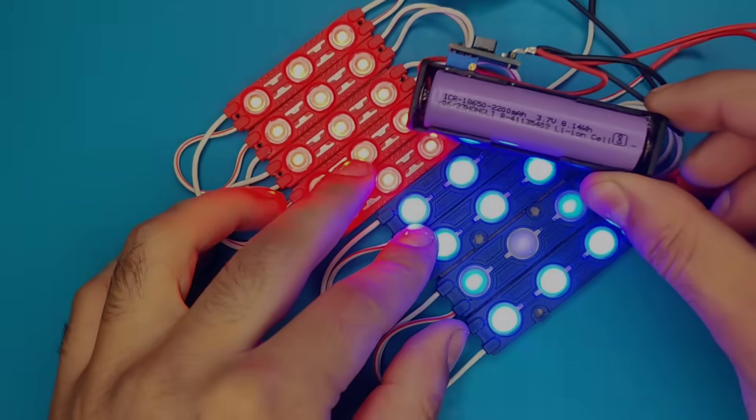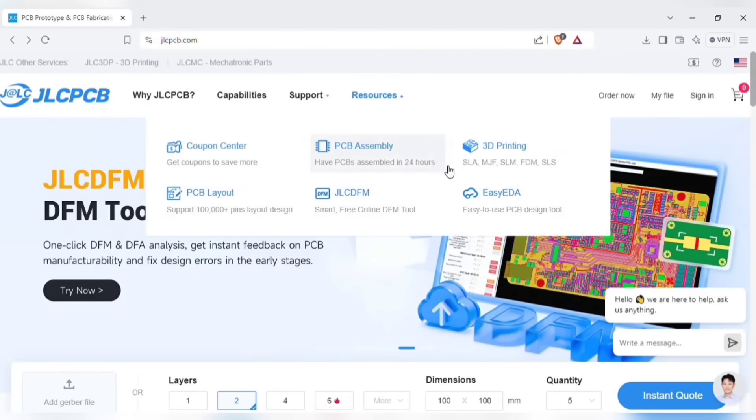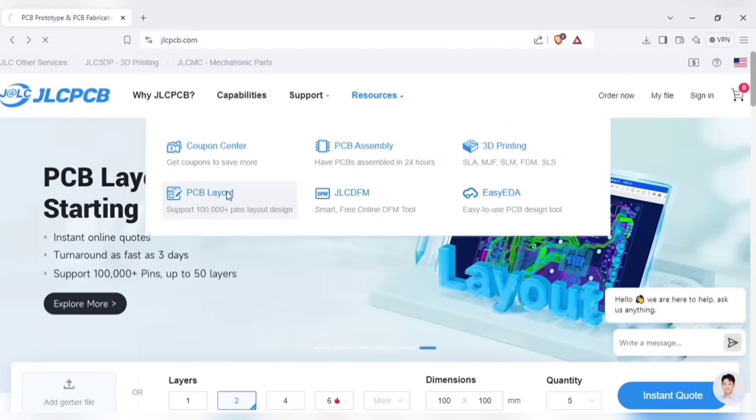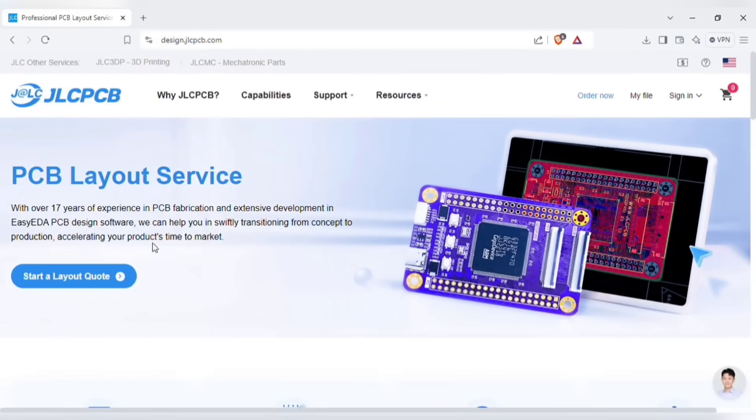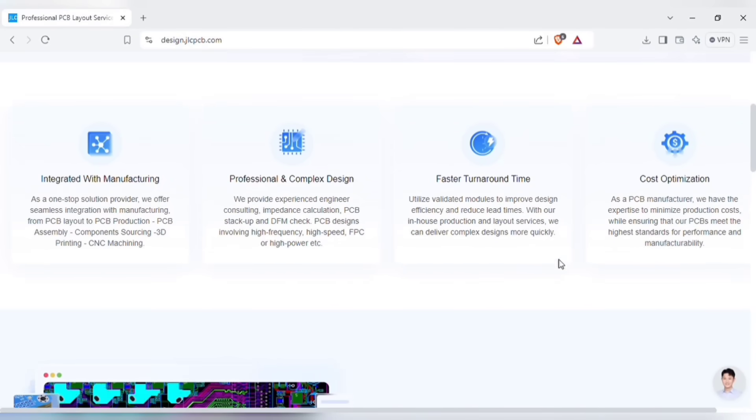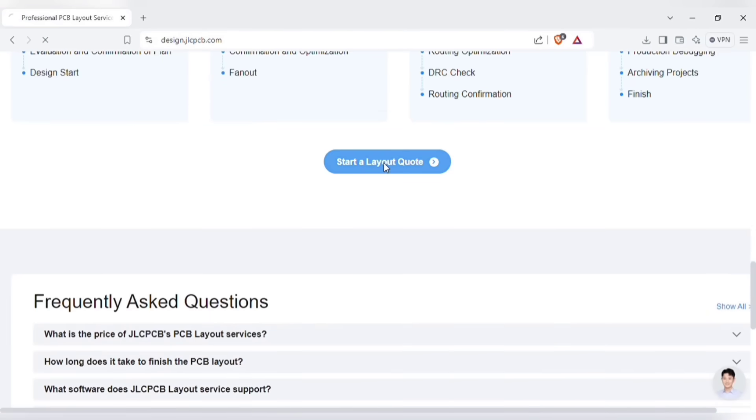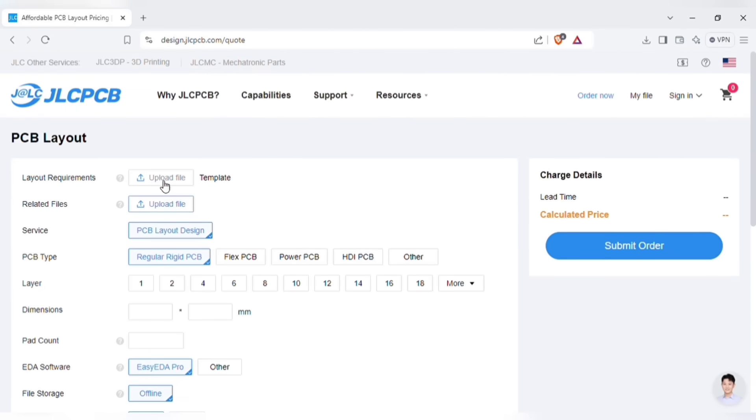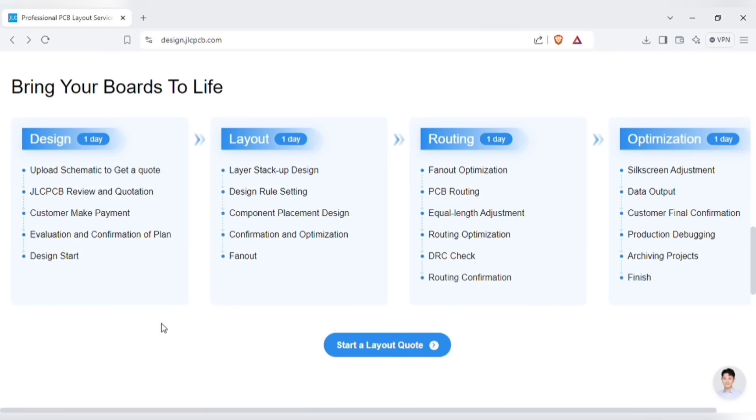Also I would like to let you know that JLCPCB launched other PCB related services like PCB layout designing, which helps you in swiftly transitioning from concept production of PCBs. As a one-stop PCB solution provider, JLCPCB offers from PCB layout to PCB production, PCB assembling to components sourcing, also 3D printing and CNC machining. Just start a layout quote and here you can upload the schematics related files. You can download the template for instructions and select the other parameters and submit the order. Your files will go all these steps during the production of your PCB.